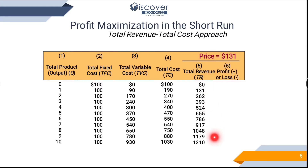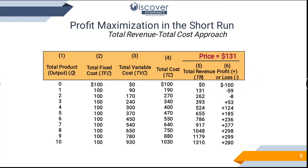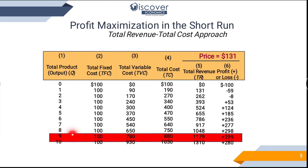The price stays the same at 131, so total revenues are: 131 × 1 = 131, 131 × 2 = 262, 131 × 3 = 393. Profit/loss equals total revenue minus total cost: 131 − 190 = −59, 262 − 270 = −8, 393 − 340 = +53. Profits increase from here, and when producing 9 units, profits are maximized at 299 — this is the equilibrium or break-even point.